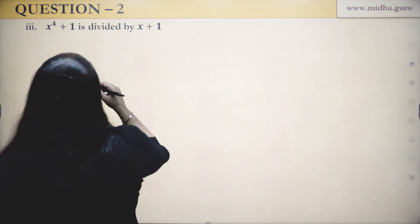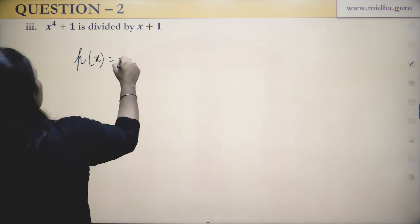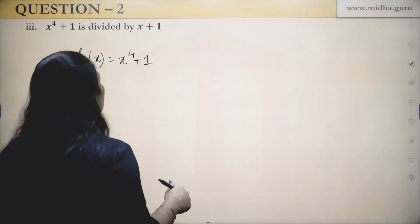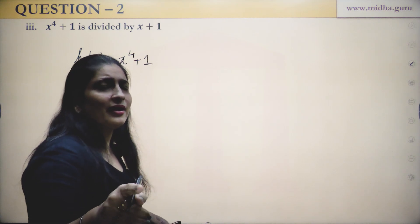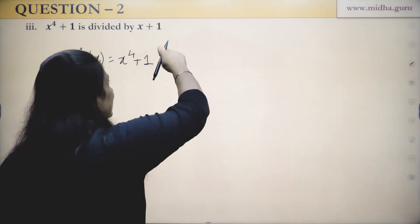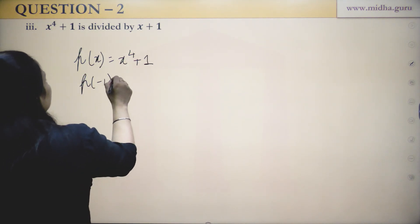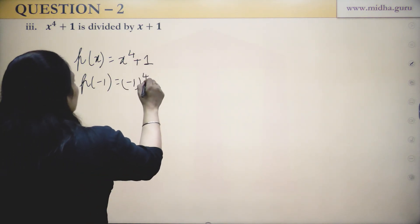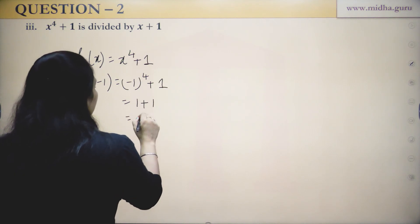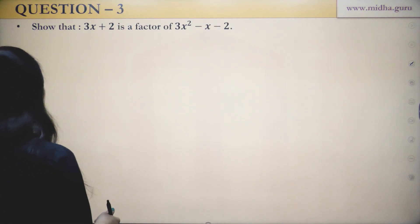Next part: find the remainder when the polynomial is divided by X + 1. Equate X + 1 = 0, so X = −1. Substitute minus 1 in place of X to get the remainder. The remainder is 2.